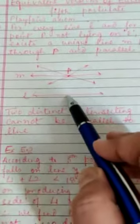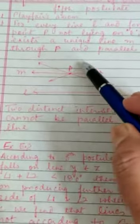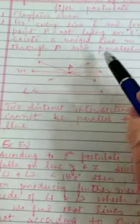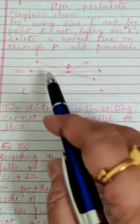Now from this point P, we can draw infinite lines. But in those infinite lines, there will be only one line.